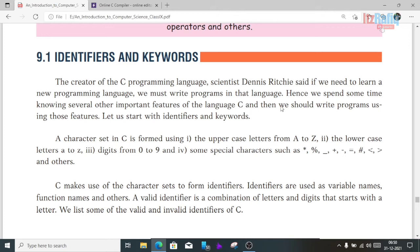C makes use of the character set to form identifiers. Identifiers are used as variable names, function names, and others. A valid identifier is a combination of letters and digits that starts with a letter. We will list some valid and invalid identifiers.